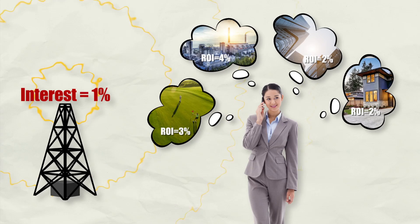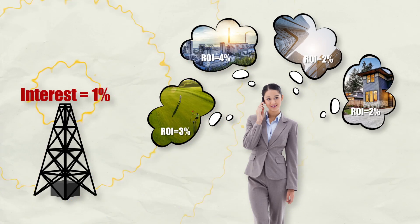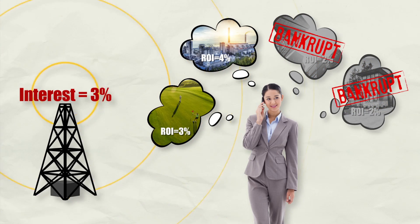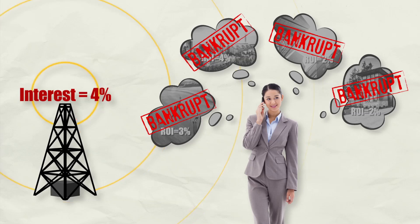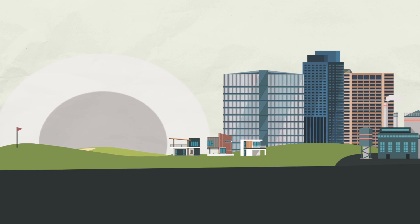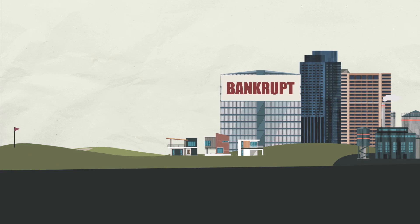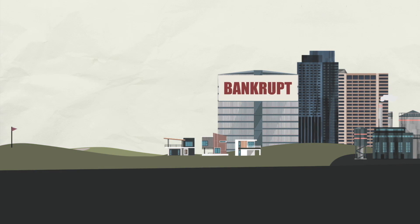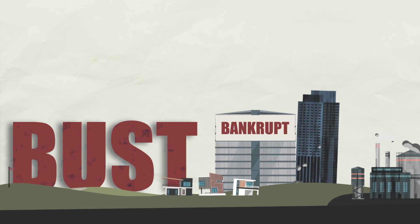Over time, those investments will be what the Austrians call self-reversing. It will be revealed eventually that the demand for homes isn't that high, and the demand for what that factory was producing isn't that high either. Maybe consumers instead want to buy ice cream and bananas — other shorter-term goods. As those long-term investments turn out to be unprofitable, they are liquidated, workers are laid off, and that is the bust part of the boom-bust business cycle.